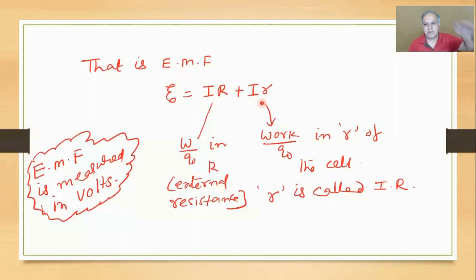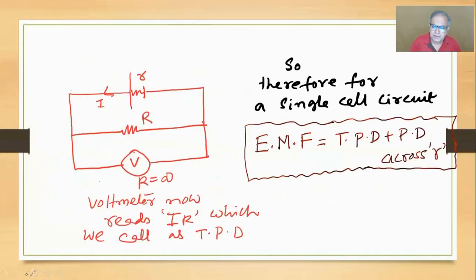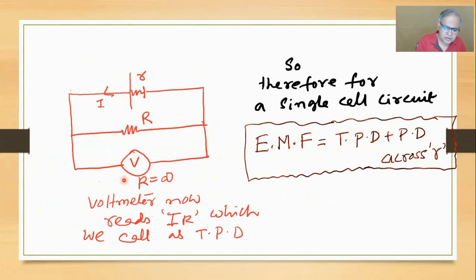So any question? Now I'll just give it in terms of numbers. I have one cell, connected with R across it. Let us say R is 10 ohms, the EMF is 4 volts, and the internal resistance is 2 ohms. So: EMF = I × 10 + I × 2, giving 4 = 12I, therefore I = 4/12 = 1/3 amperes.